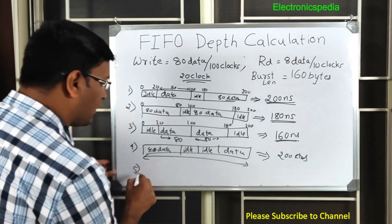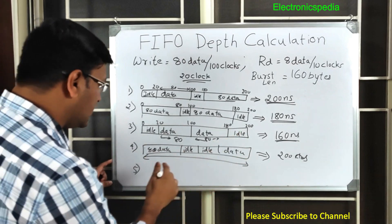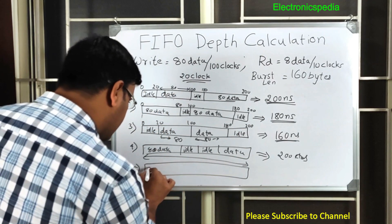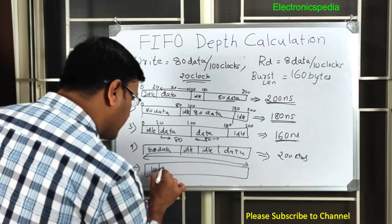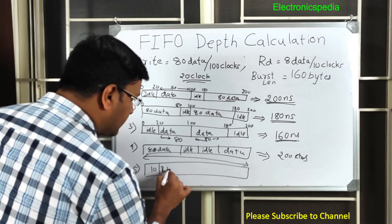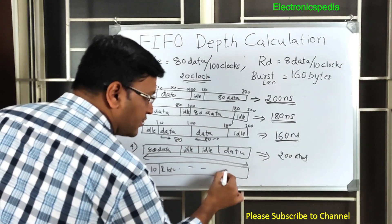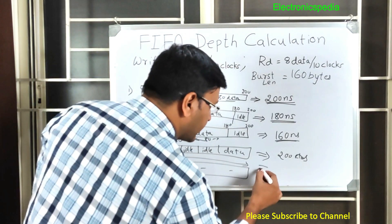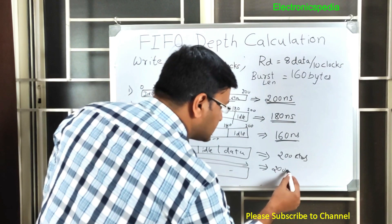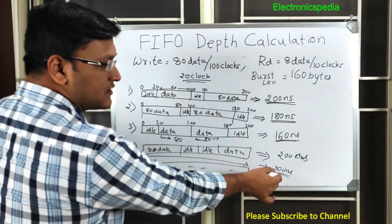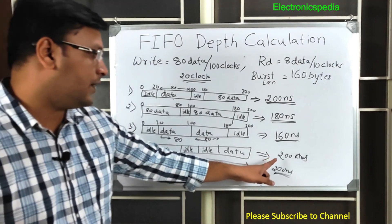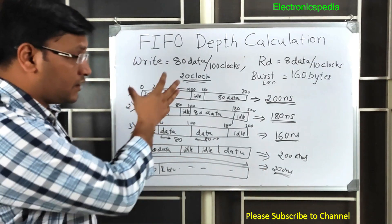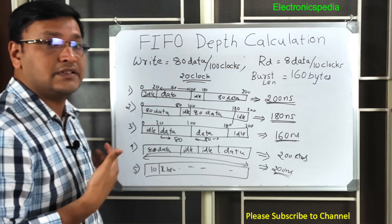In the fifth case, it is completely randomized. You could have chunks of 10 bytes of data, followed by 2 clock cycles of idle window, and so on — all possible combinations. This will still take up to 200 clock cycles, though it could be less.